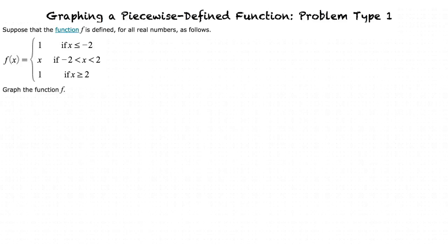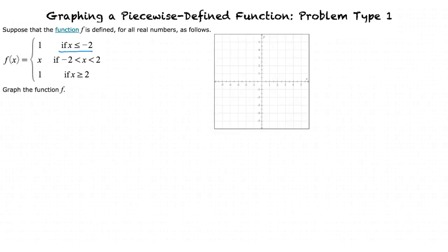First, let's take a look at the graph f of x is equal to 1 where x is less than or equal to negative 2. Recall that when a function is equal to a constant, the graph of that entire function is a straight horizontal line at that specified constant. So in this case, we graph a straight horizontal line through y is equal to 1.